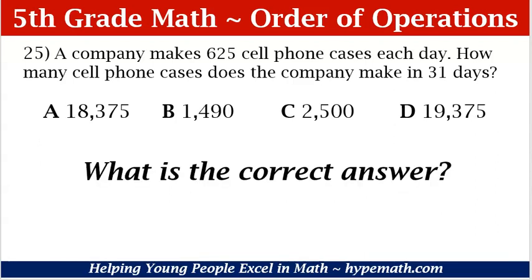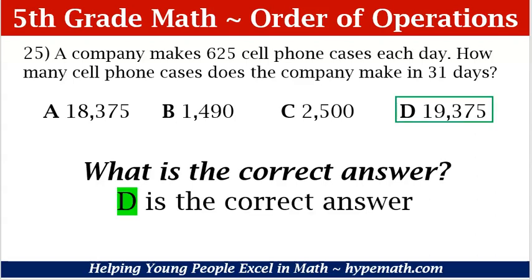What is our correct answer? If you said D, you are absolutely correct. 19,375 is how many cell phone cases the company will make in 31 days. Awesome.